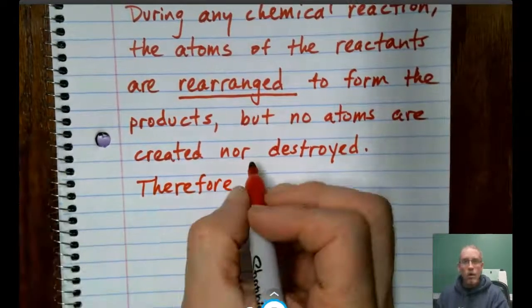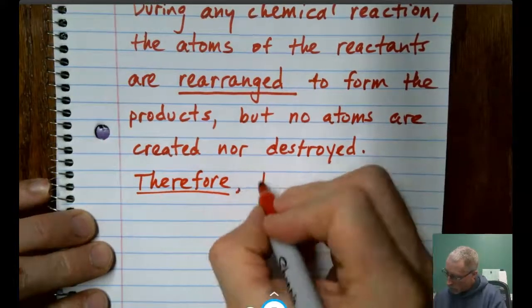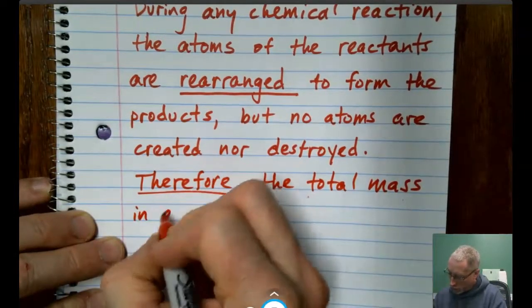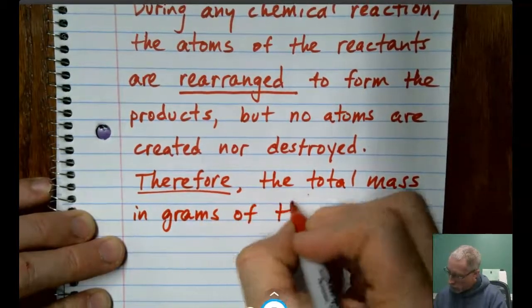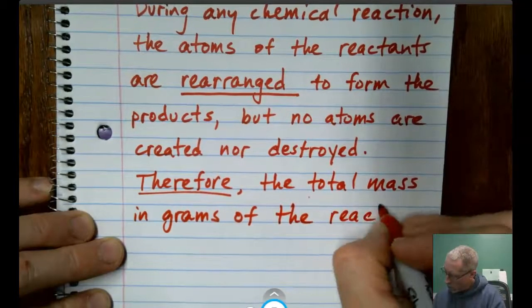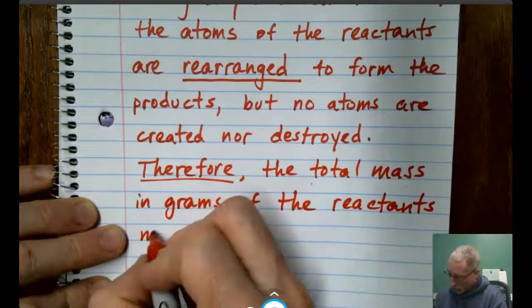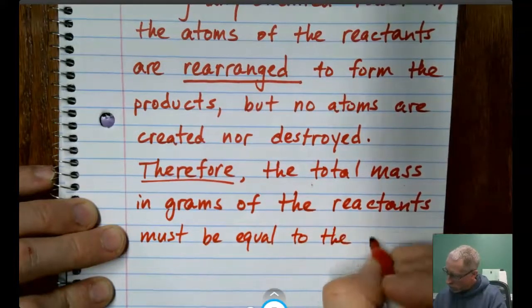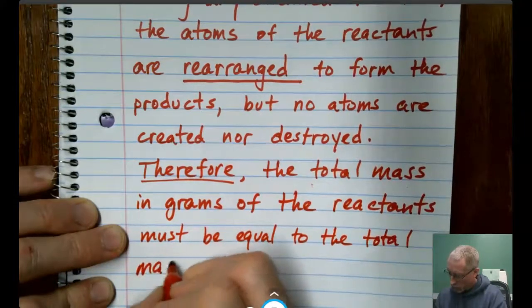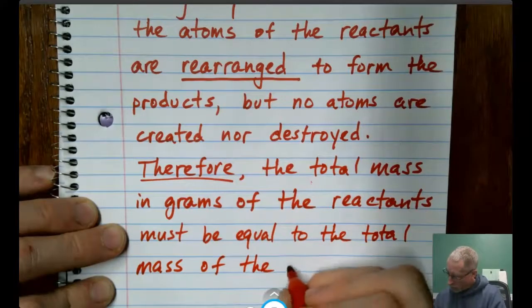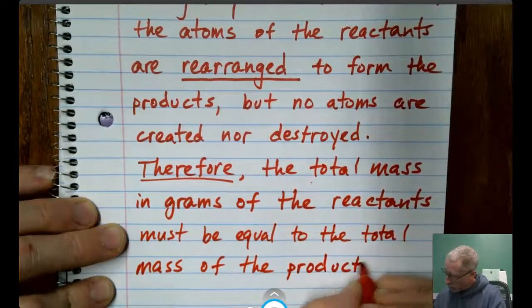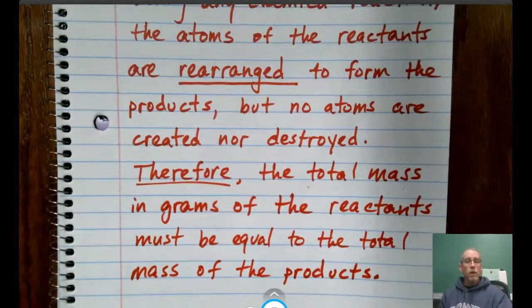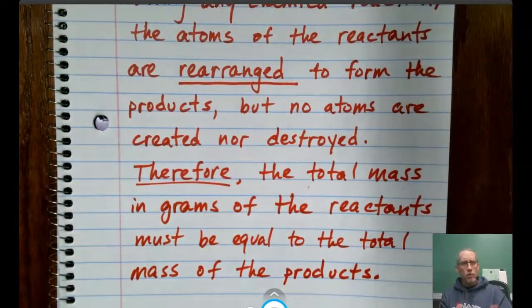Therefore, here's one of the consequences and what we're going to deal with mostly today. The total mass in grams of the reactants must be equal to the total mass of the products. Again, I'll let you pause here if you need to get that finished up and then I'll show you some examples of just what this looks like.